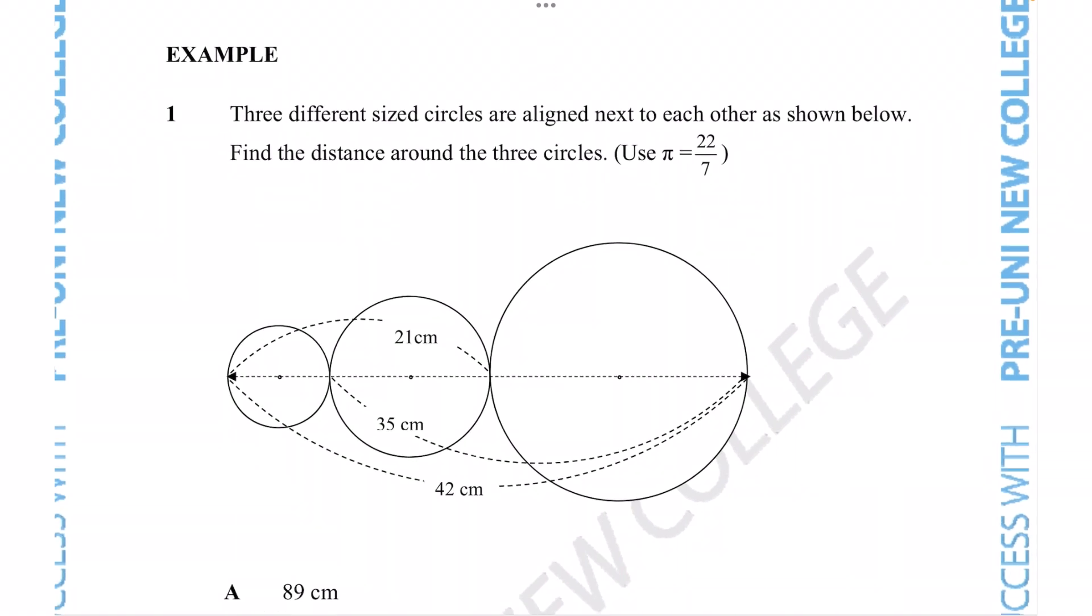Here we're given three different size circles are aligned next to each other as shown below. And we want to find the distance around the three circles, making sure that we use π = 22/7. So if they're asking for the distance around the three circles, they're essentially asking us to find the circumference of all three circles. Either way we need to figure out the diameter or the radius of these circles, and unfortunately they haven't given us the diameter or radius of any of these circles. So we need to use these clues to figure out what d is before we can even think about calculating what c is.